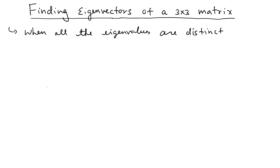In another video we talked about what happened when there are only two eigenvalues — in that case you can find the eigenvectors very easily just by looking at the columns. But here we have to do some algebra; we have to multiply certain things, so let's talk about that.